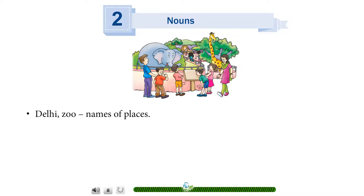Delhi, zoo — names of places. Happiness — state of feelings.